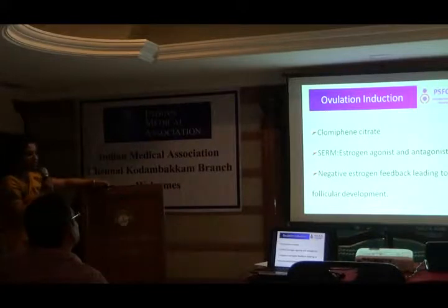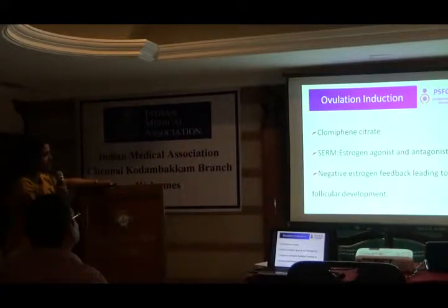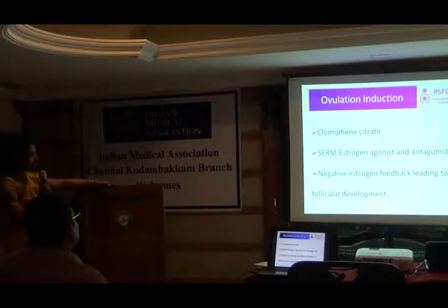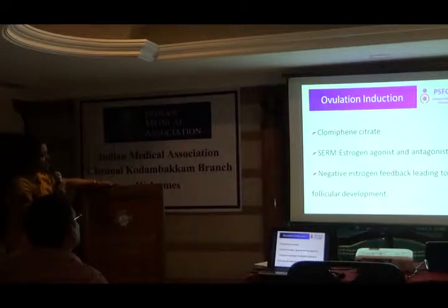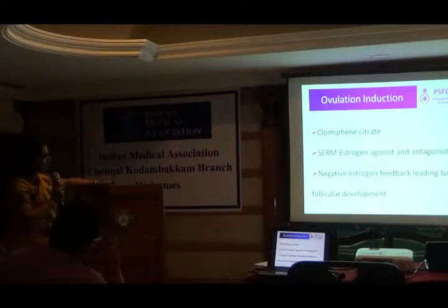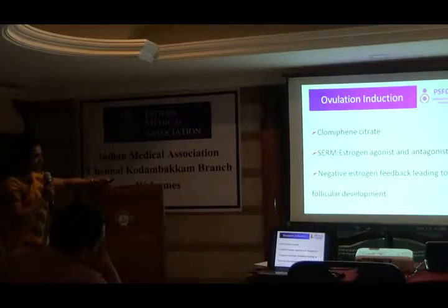How does clomiphene citrate act? It is an estrogen agonist and antagonist — two types of active isomers. It acts as an estrogen agonist in the peripheral tissues, so the estrogen level is less. Once the estrogen is less, there is a negative feedback effect, and the GnRH again secretes an increased amplitude, leading to follicular development.